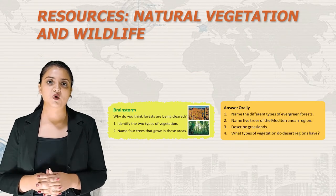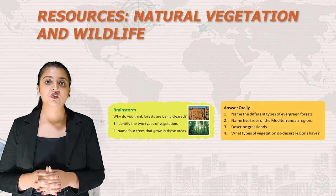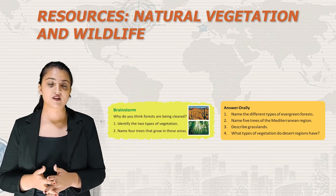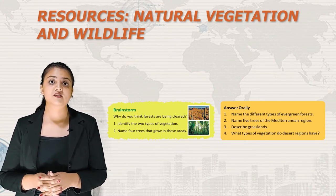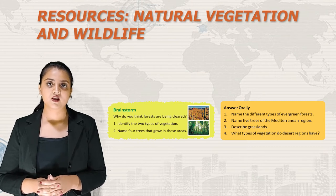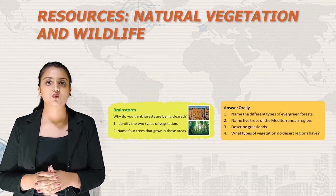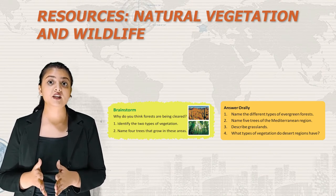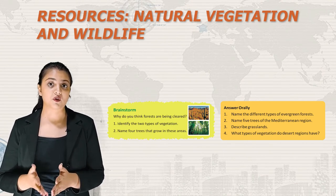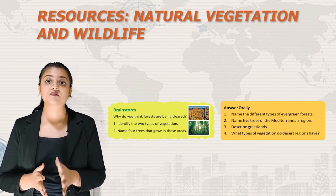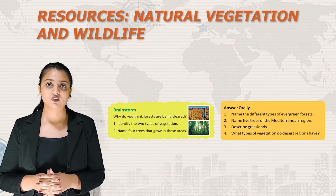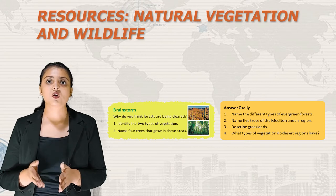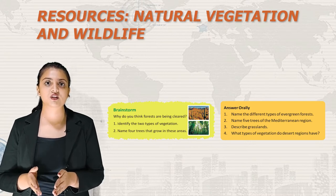Let's brainstorm: why are forests being cleared? First, identify the two types of vegetation; second, name four trees that grow in that area. Now some oral questions: name the different types of evergreen forests; name five trees of the Mediterranean region; describe grasslands; and what types of vegetation do desert regions have?